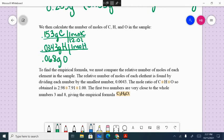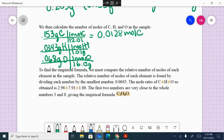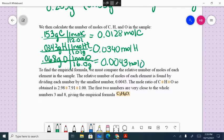Once I have them in moles, then I can compare them to each other. So I have 0.0128 moles of carbon, 0.0340 moles of hydrogen and 0.0043 moles of oxygen. Now that I have them in moles, I can compare them.